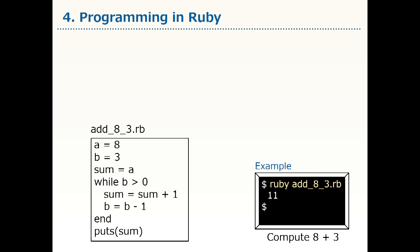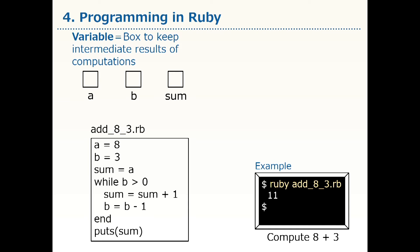Let's first think about the elements of this program, starting with variables. Variables are boxes for keeping the intermediate results of computations. Viewing this program, the letters A, B, and SUM are used — and these are variables.